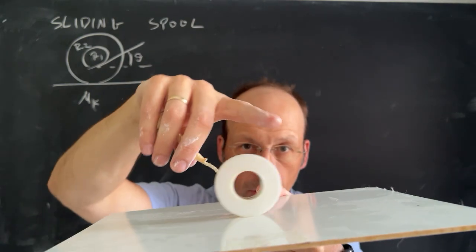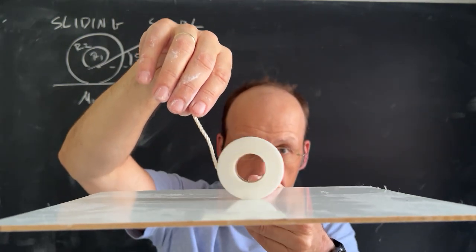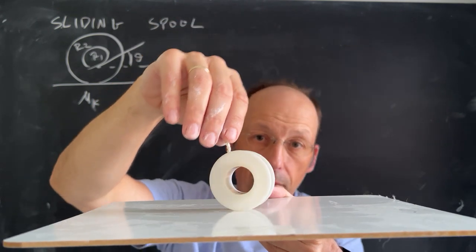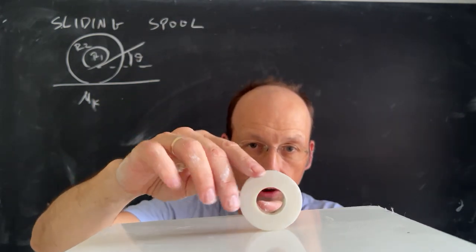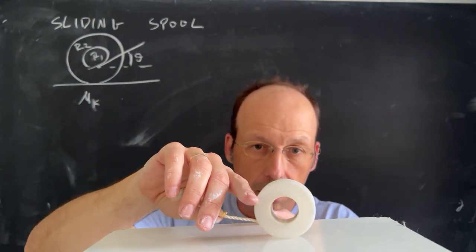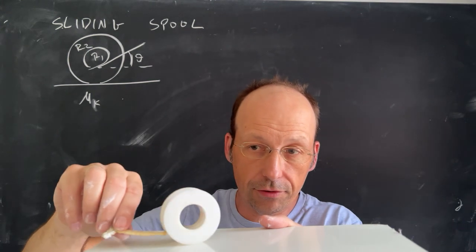I'm going to pull it. If I pull at a really steep angle, like this, the spool rolls that way. If I pull at a very low angle, this one's kind of cool, the spool rolls in the direction of the string.